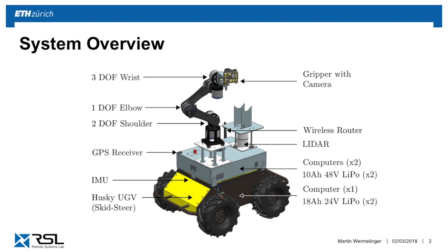And there we have the arm. It is a six-DOF arm that also uses series elastic actuators, the same as used in the legged robot. It is a compliant arm designed for interaction tasks. At the end effector, which is replaceable, it can have different grippers and cameras.